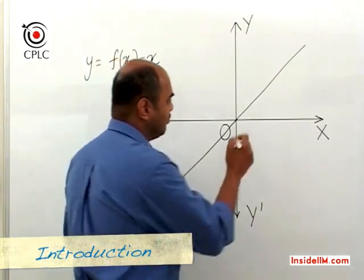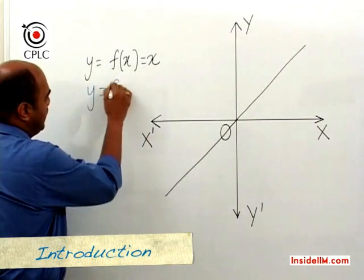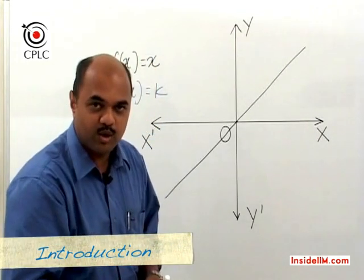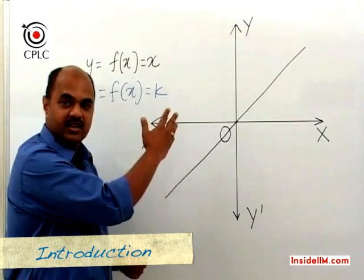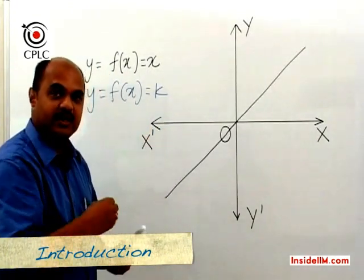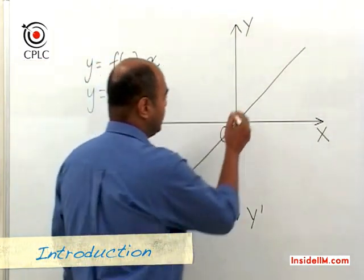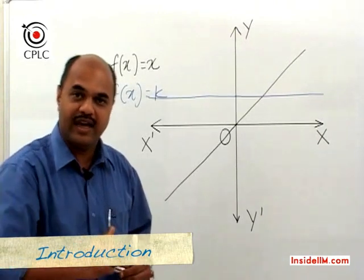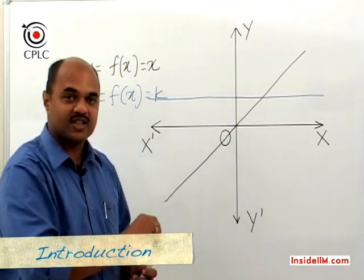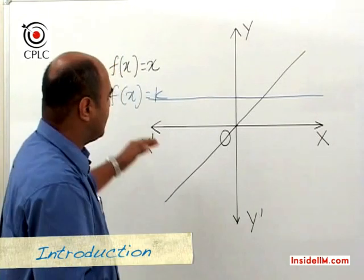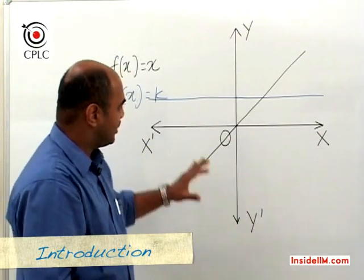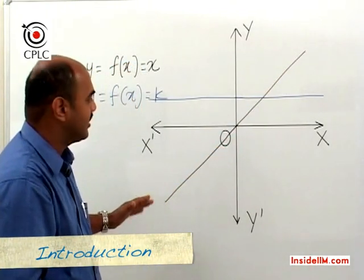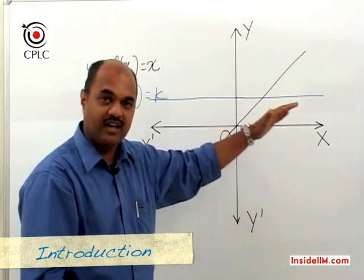Let's look at another function — a constant function where y = f(x) = some constant k. Depending on the value of k, if k is 2, then whatever be the value of x, the value of y will always be 2. Hence, if we draw this as a graph, at y = 2 we get a horizontal line parallel to the x-axis. This graph tells us that irrespective of x, the value of y always remains constant at 2. So we have looked at two functions: the identity function, a line through the origin at 45°, and the constant function, a line parallel to the x-axis.